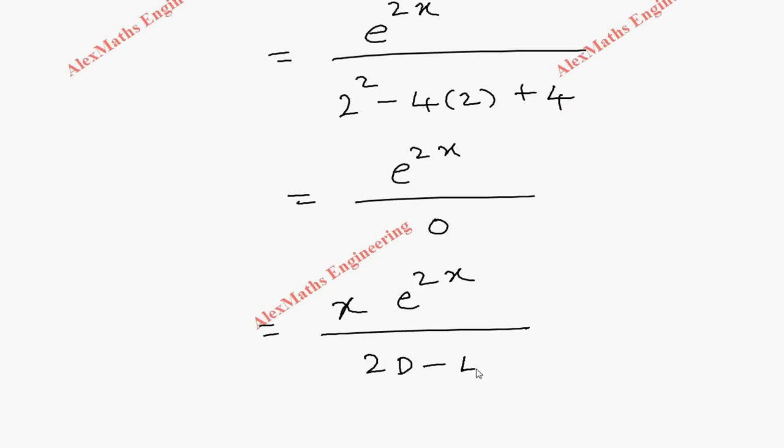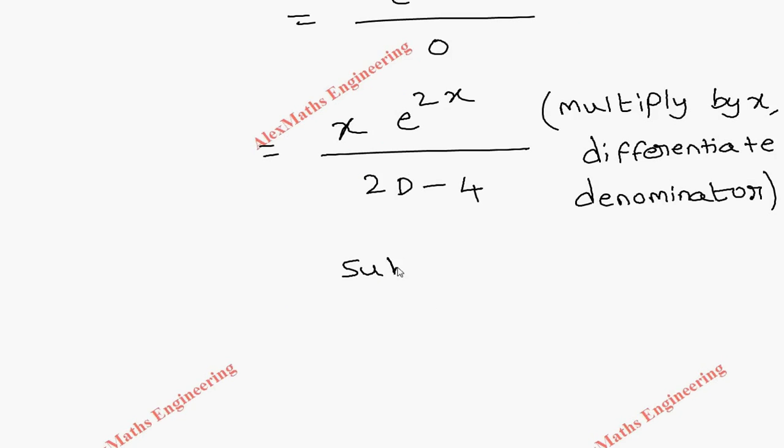Now once again substitute the value of D as 2, so x·e^(2x) divided by 2(2) - 4. Once again we get 0 in the denominator.